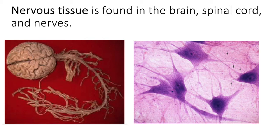Neurons can be sensory, where they bring information into your body, or motor, where they send information out. Sensory and motor neurons are part of the peripheral nervous system — those are your nerves. They can also be contained within the central nervous system.